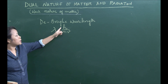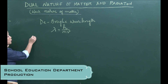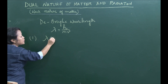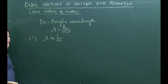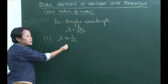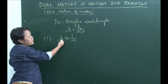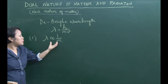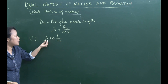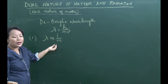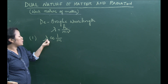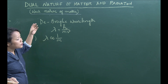The de Broglie wavelength is: λ = h/mv. From this equation, with h and v constant, λ is inversely proportional to the mass of the particle. So as mass increases, the wavelength decreases. This is why macroscopic objects like a ball have an extremely small, undetectable de Broglie wavelength.